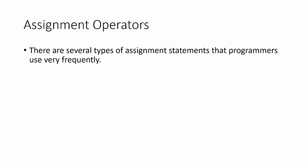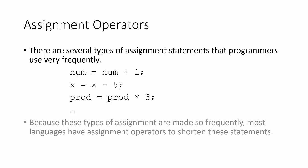There are several different types of assignment statements that we use as programmers quite frequently — such as num equals num plus one, our basic incrementer; x equals x minus five, a decrementer; or prod equals prod times three. Any sort of statement where we're assigning a variable some arithmetic property — adding, subtracting, multiplying, dividing, or modulus of itself. Because these types of assignments are made so frequently, most programming languages have assignment operators to shorten these statements down for us.